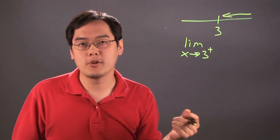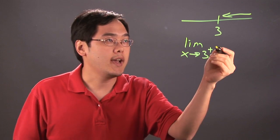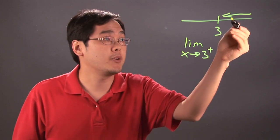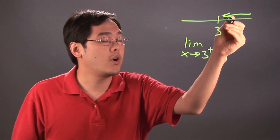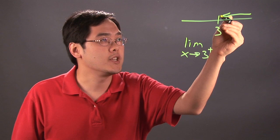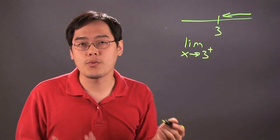That means you're talking about numbers greater than 3, but close to 3. So for example, it can be 4, then 3.1, 3.01, 3.001, but you're going to get as close to 3 as possible.